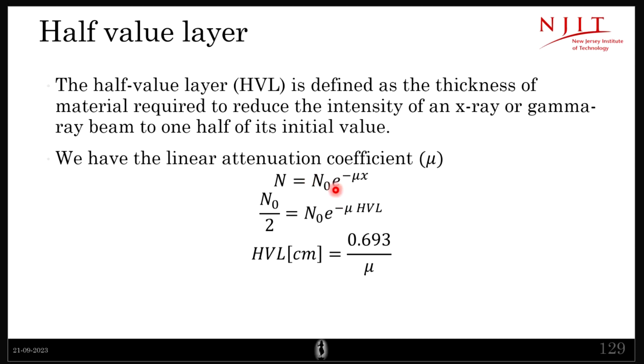Initially I had N₀ amount of photons. Now, if I travel half value layer amount of distance, the intensity or the number of photons will be halved, N₀ by 2. And it turns out that if you work this mathematically, you will get half value layer in centimeters because this is the length.